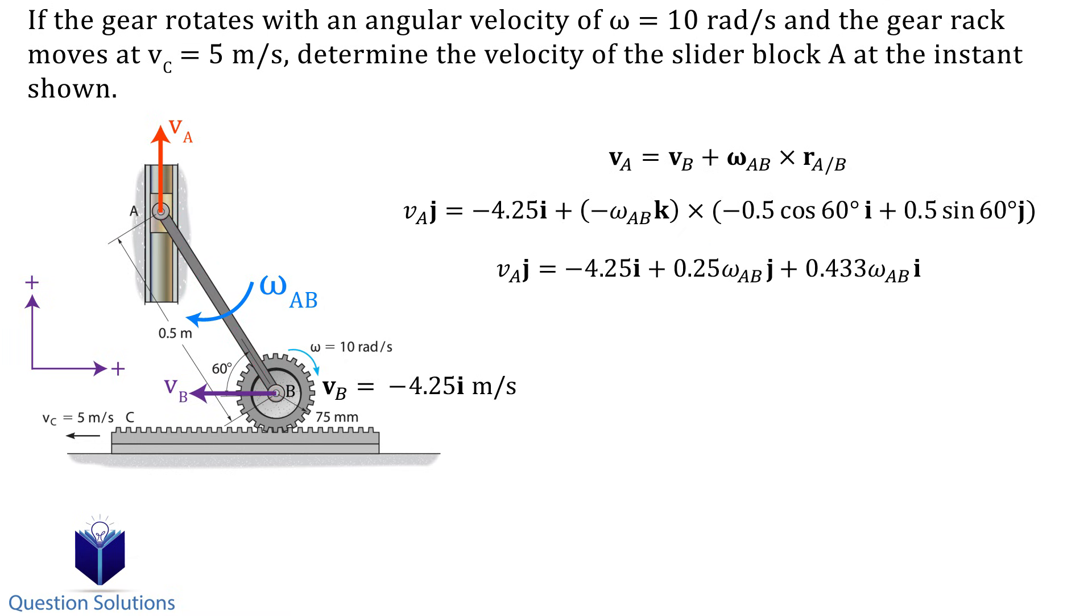Now we can solve by equating i and j components together, and then solving the equations. First i components, solving will give us the angular velocity, now the j components. Let's plug in the angular velocity we just found and solve. We see that the slider moves up with a velocity of 2.45 meters per second.